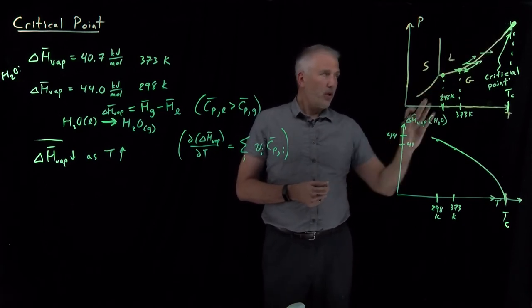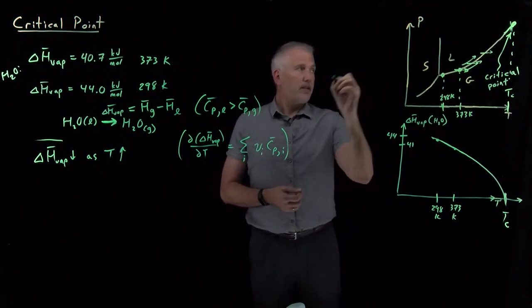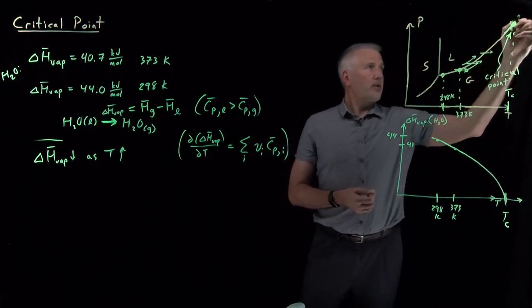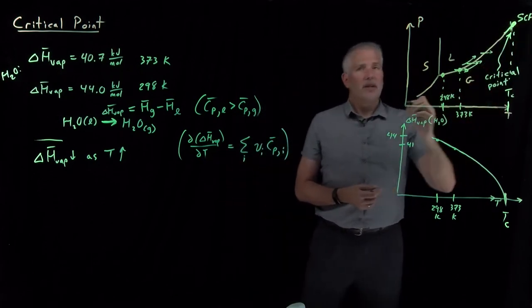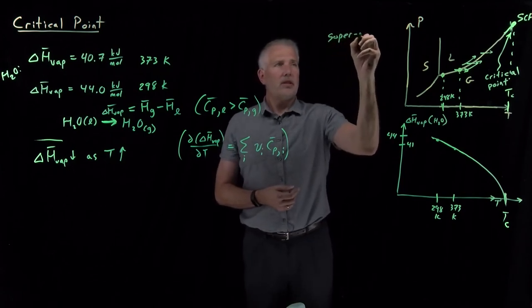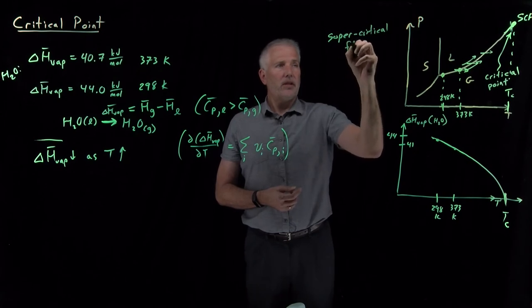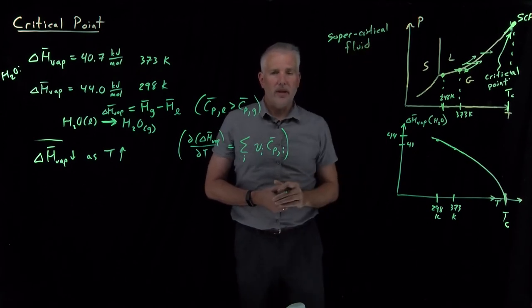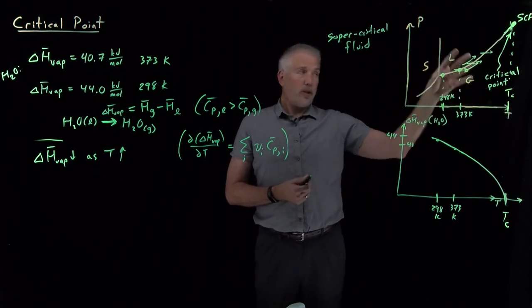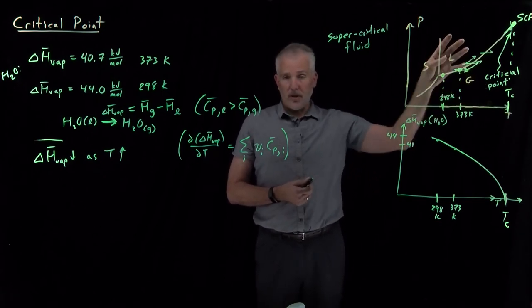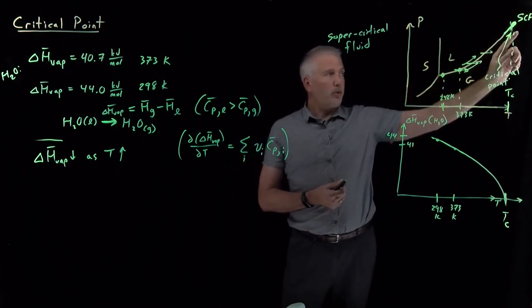Above the critical point we no longer distinguish between liquid and gas. The substance above the critical point is called a supercritical fluid, or SCF. 'Supercritical' means above that critical point; 'fluid' is used when we intentionally don't distinguish between liquid and gas, since both liquids and gases are fluids.